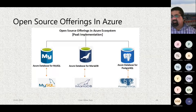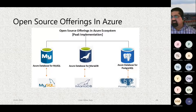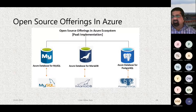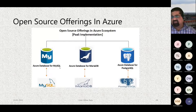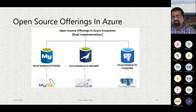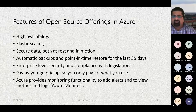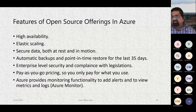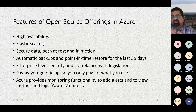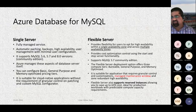Moving to open source offerings in Azure: you have Azure Database for MySQL, Azure Database for MariaDB, and Azure Database for PostgreSQL. These support migration of on-premise open source databases to Azure. All provide high availability, elasticity, data encryption at rest and in motion, automatic backups, and enterprise-level security and compliance.